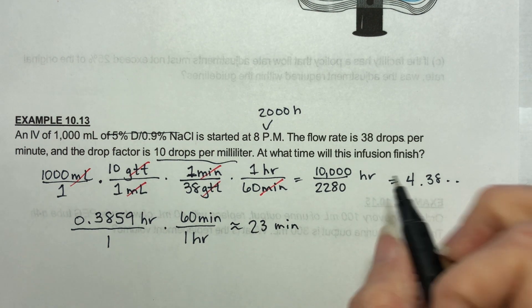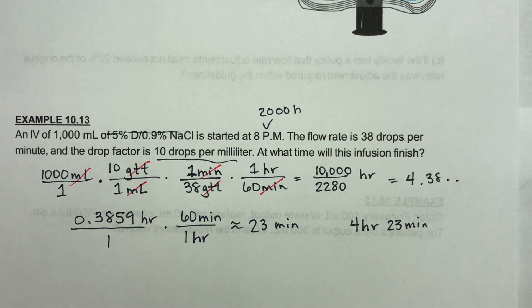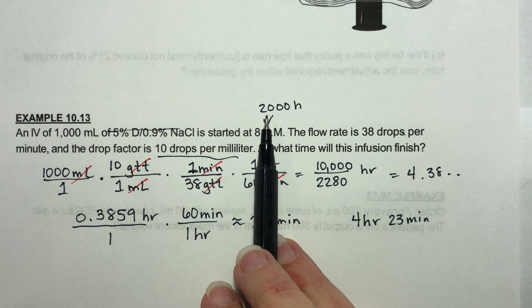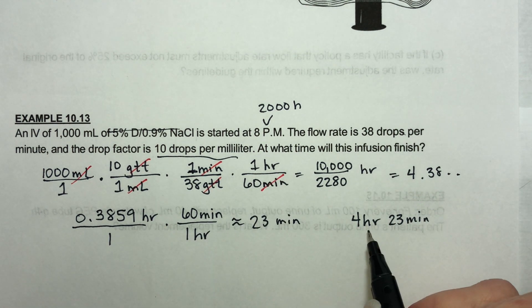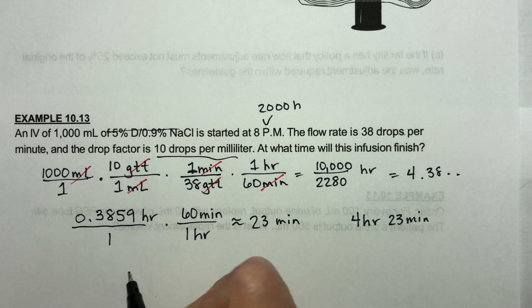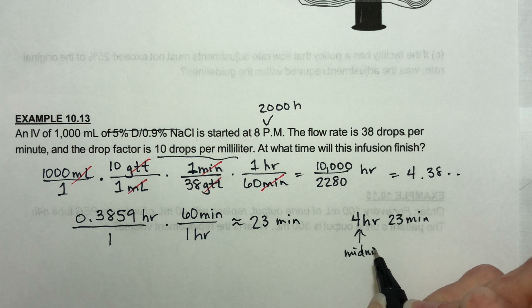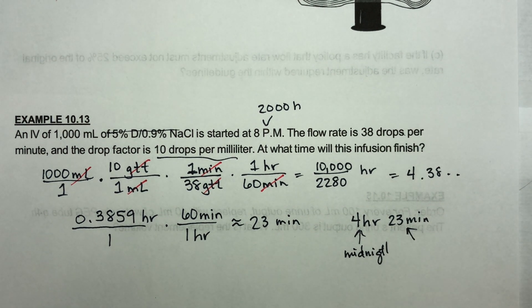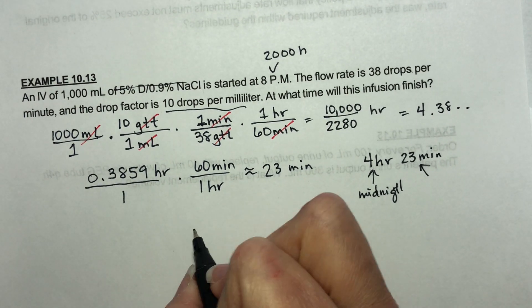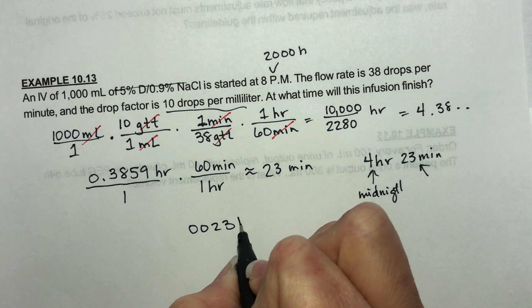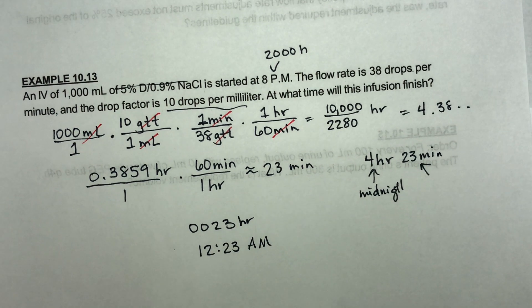So this infusion is going to finish in about 4 hours and 23 minutes. Now when is that? If it started at 8 p.m. and we add 4 hours, that brings us to midnight — we're on the next day. Adding 23 more minutes means this will finish 23 minutes past midnight. You could write it as 00:23 or 12:23 a.m.